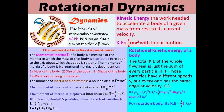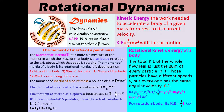The moment of inertia of a point mass about an axis is given by: moment of inertia equals the mass of the body multiplied by the square of the radius — that is, the distance between the axis of rotation and the point.